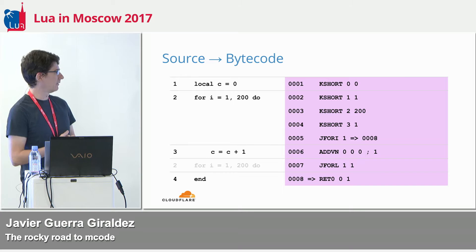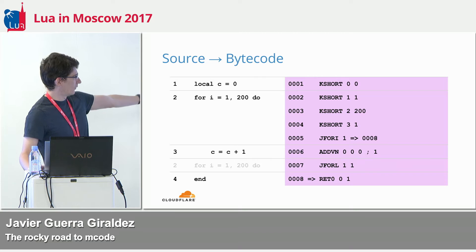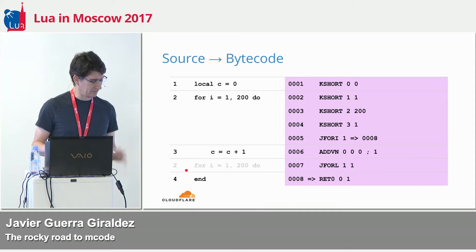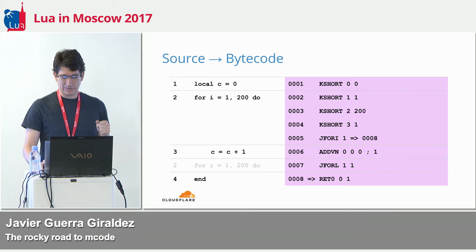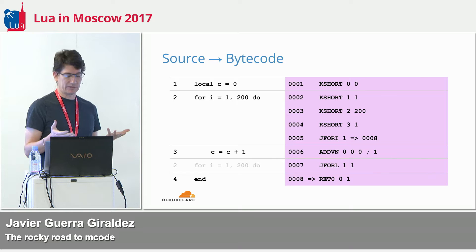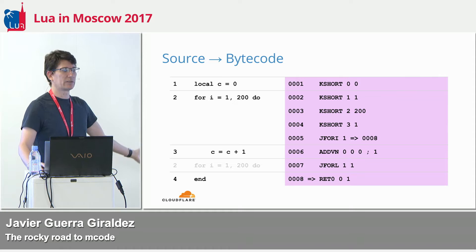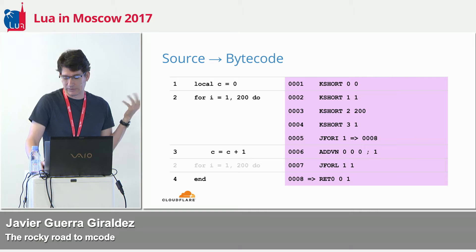It shows the same bytecode, almost, with a very small difference — it shows where each part came from, even for those parts that came from an out-of-order line. It has already started to mangle with your code. And what does LuaJIT do? This is a loop. When it runs several times — 200 times in this case — it detects that this is a hot part of your code, so it would be an advantage to compile it.